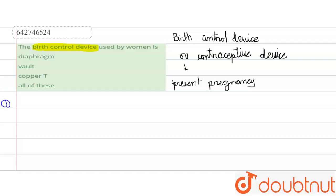Second is vault, and the third one is copper T. So what is this diaphragm and vault?